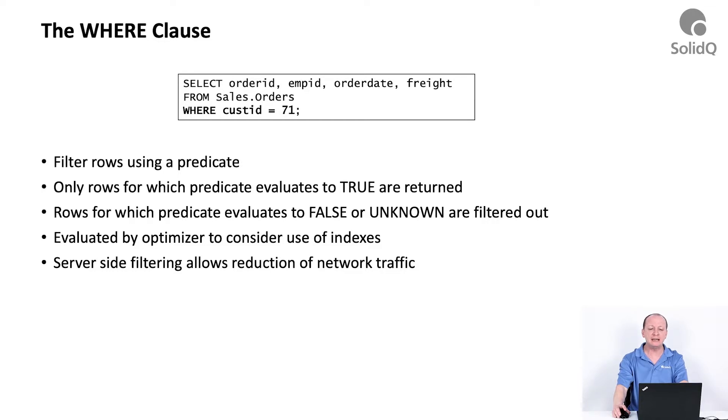For instance, if we created an index on the customer ID column, the index organizes the customer ID values sorted and has a navigation structure that helps us get very quickly to a particular point that could be the beginning of a range that we are after. In this particular example, if we have an index on the customer ID column, instead of scanning the entire table, SQL Server could go through the index and filter only the relevant rows, doing much less physical effort.